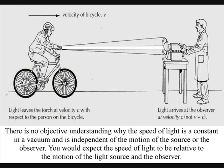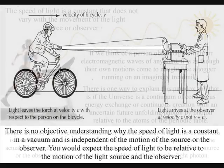There is no objective understanding why the speed of light is a constant in a vacuum and is independent of the motion of the source or the observer. This is very odd. You would expect the speed of light to be relative to the motion of the light source and the observer.